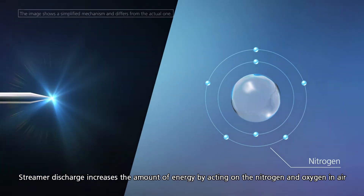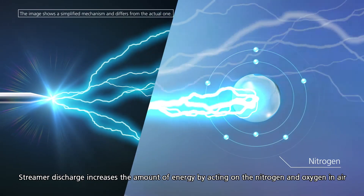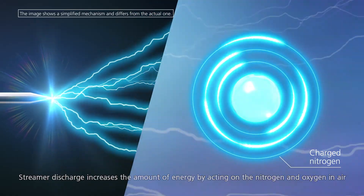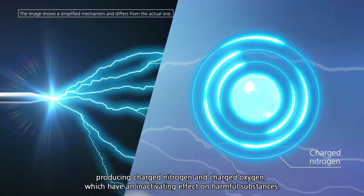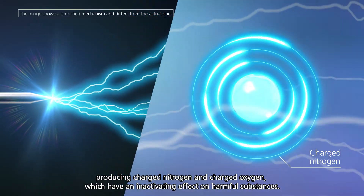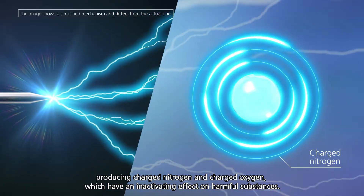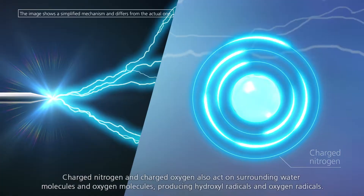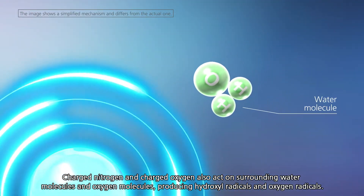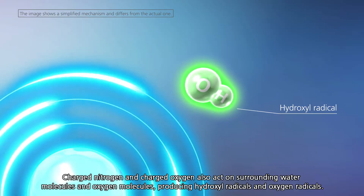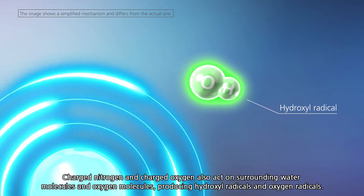Streamer discharge increases the amount of energy by acting on the nitrogen and oxygen in air, producing charged nitrogen and charged oxygen, which have an inactivating effect on harmful substances. Charged nitrogen and charged oxygen also act on surrounding water molecules and oxygen molecules, producing hydroxyl radicals and oxygen radicals.